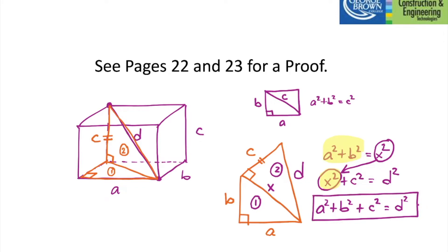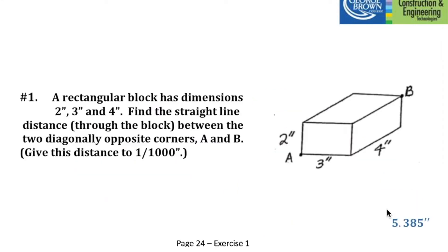This formula lets you calculate straight-line distances in three dimensions, important in construction and architecture. Let's take a look at an example. We have a rectangular prism with dimensions 2 by 3 by 4 inches. We're asked to find the distance from the diagonally opposite corners A and B — that length D is the inner diagonal of the box.